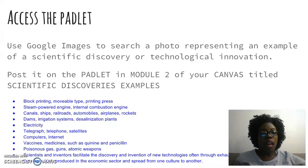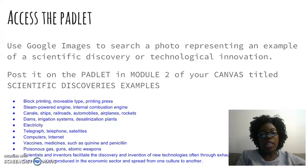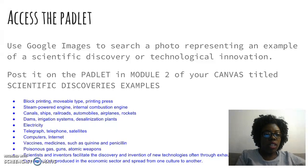Things like block printing, the steam-powered engine, canals, ships, dams, and irrigation systems — all of these are examples of innovation that existed before electricity was invented.